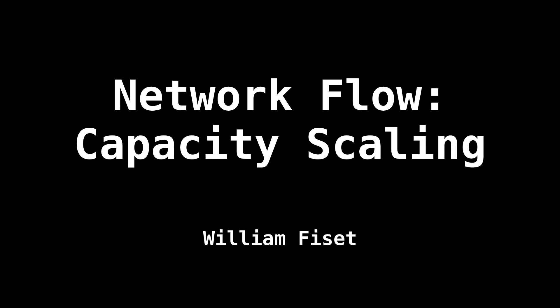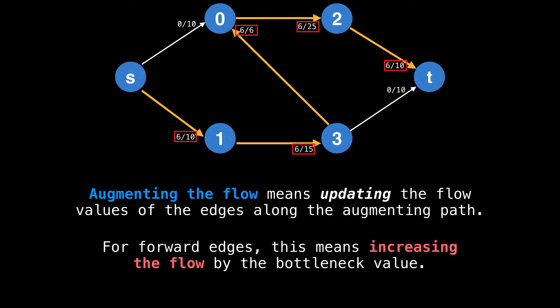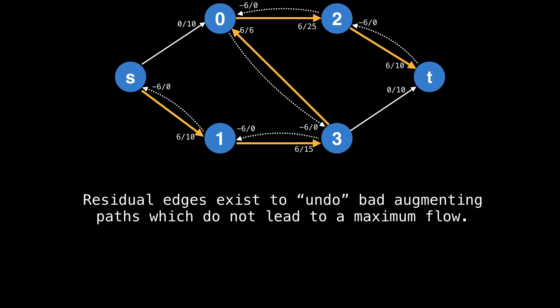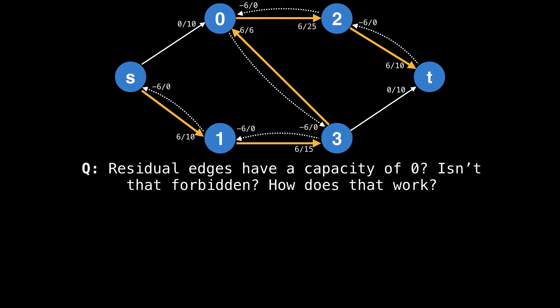And today we're still talking about network flow. And in particular, we're going to cover something called capacity scaling, which is really more of a heuristic than it is an algorithm. Capacity scaling is a heuristic which says that we should attempt to push flow only through the largest edges first and then allow using edges which have smaller capacities and do this to achieve the maximum flow more rapidly. This video builds off the max flow tutorial I made a few videos back. So I highly recommend you go back and watch that before proceeding.